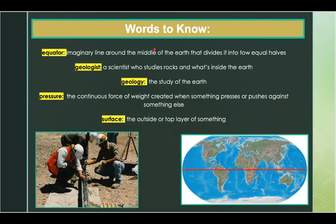First off, we always start with the words that we need to know, and let's begin. Equator — the imaginary line around the middle of the earth that divides it into two equal halves. An example of this is: Isabel is from Ecuador, which is a country in South America near the equator.